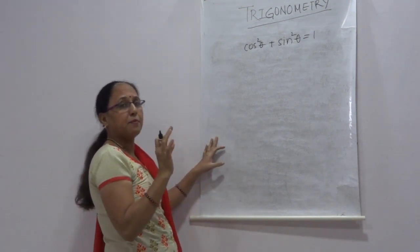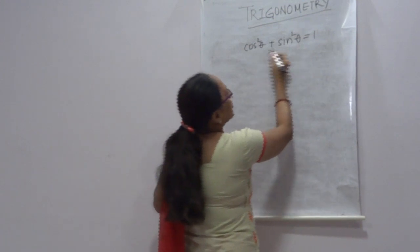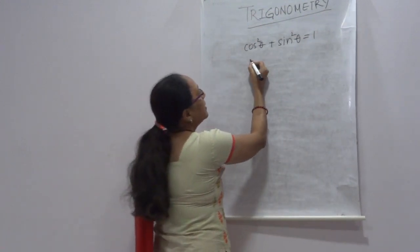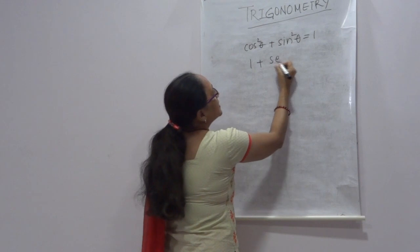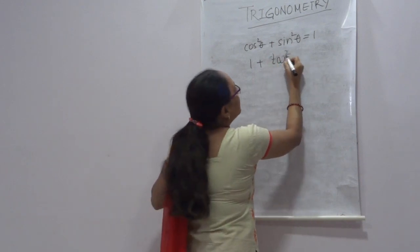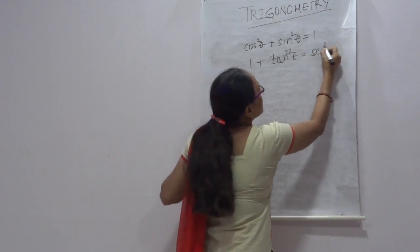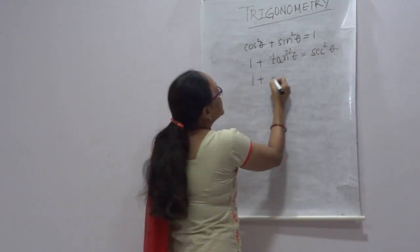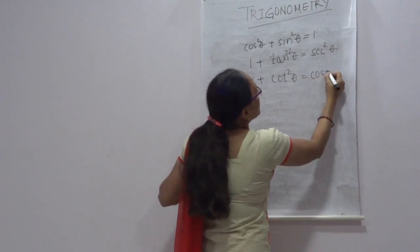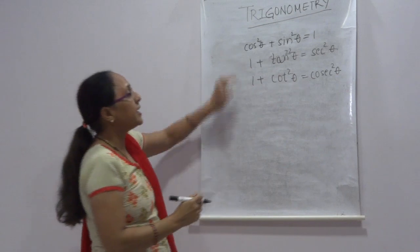There are only 3 identities but you have to remember them. First: cos²θ + sin²θ = 1. Second: 1 + tan²θ = sec²θ. Third: 1 + cot²θ = cosec²θ. So these are the 3 identities.